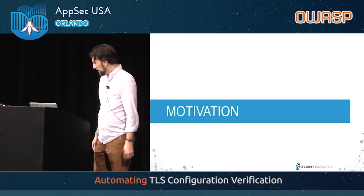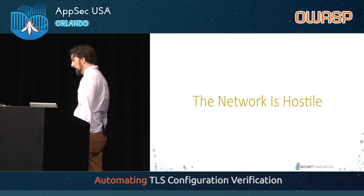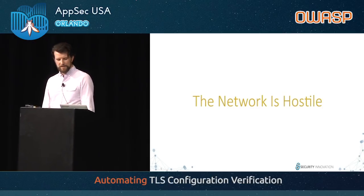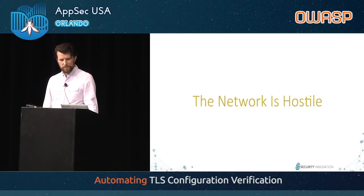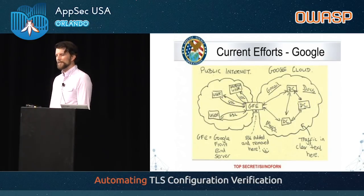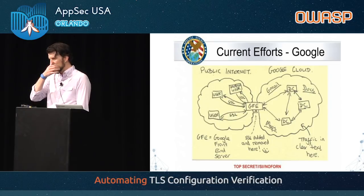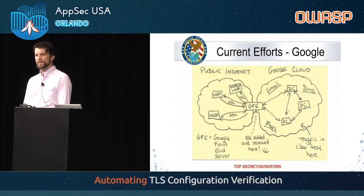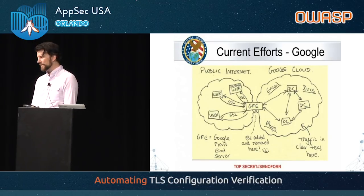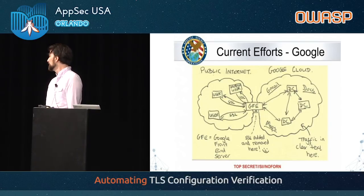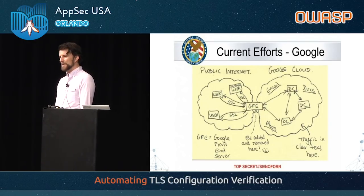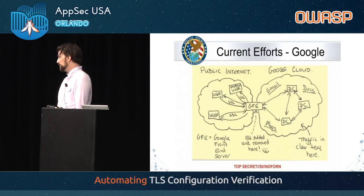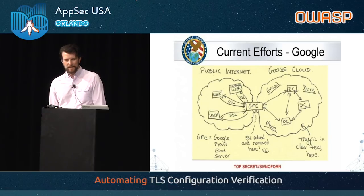Right into the motivation: the network is hostile. It's not really a question anymore — I think we can all agree. The Snowden documents confirmed our fears that there are actors, nation states and otherwise, who are actively monitoring our traffic. If you do not control your network end-to-end, you should expect that your traffic is being viewed and possibly interfered with. And the solution that we have is end-to-end encryption.